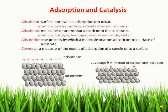This slide shows various terms in adsorption surface phenomena. One is adsorbent — that is the surface onto which adsorption can occur, for example catalyst surfaces, activated carbon, alumina, etc. And adsorbate — those are the molecules or atoms that adsorb onto the substrate, for example nitrogen, hydrogen, carbon monoxide, and water. For example, in adsorption of oxalic acid on charcoal, the charcoal is adsorbent and oxalic acid is adsorbate. Similarly, acetic acid is adsorbate and charcoal is adsorbent.